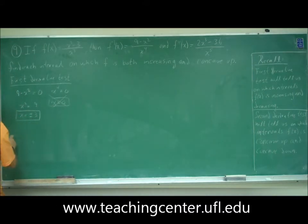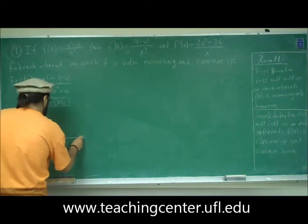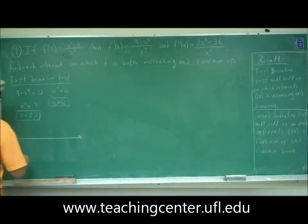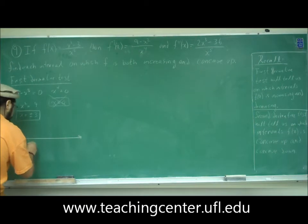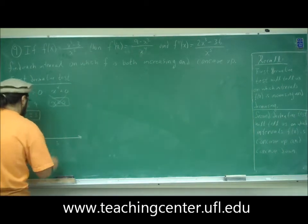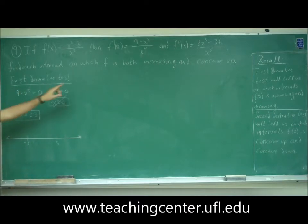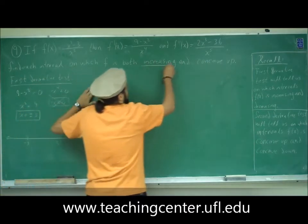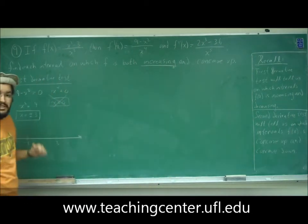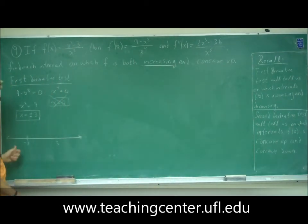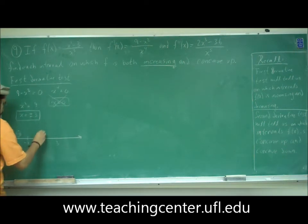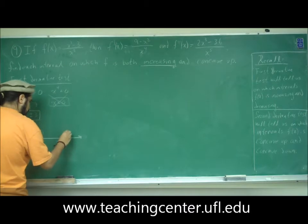Now that we have our two critical numbers, 3 and -3, we can plot them on a number line. We'll pick test points: -4 to the left of -3, 1 between -3 and 3, and 4 to the right of 3.